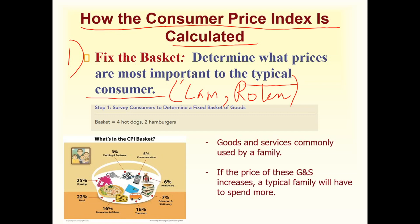In real life, many surveys have been done throughout the world in different countries to find out what consumers purchase in their daily lives most of the time. There are around 600 products which consumers normally use daily — it's not the exact number, but it's about 600 products. That is the basis of the first step: survey consumers to find out what goods they use.